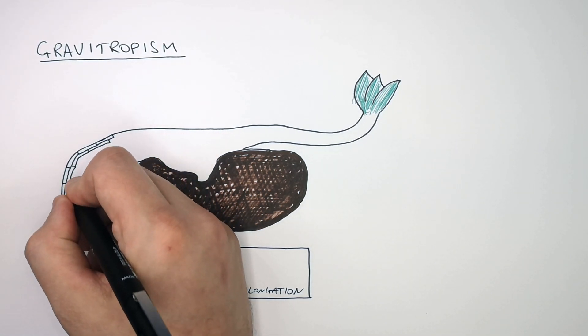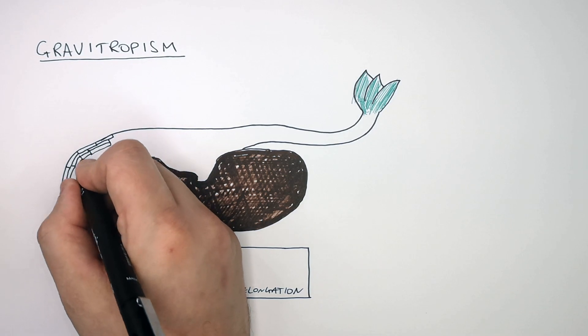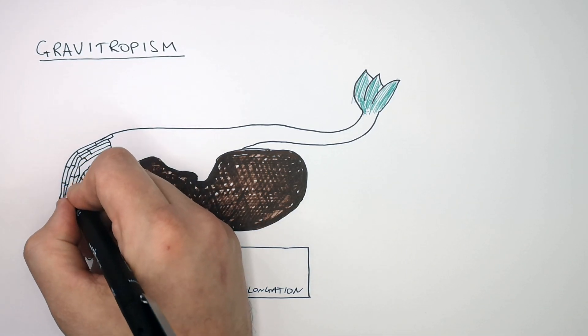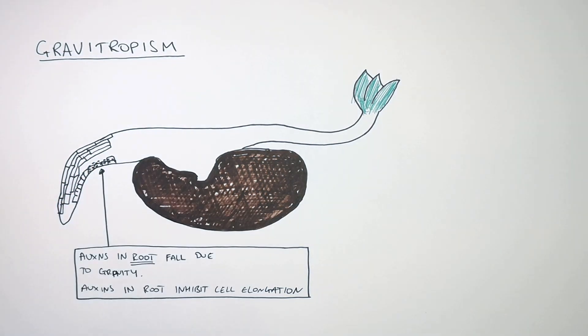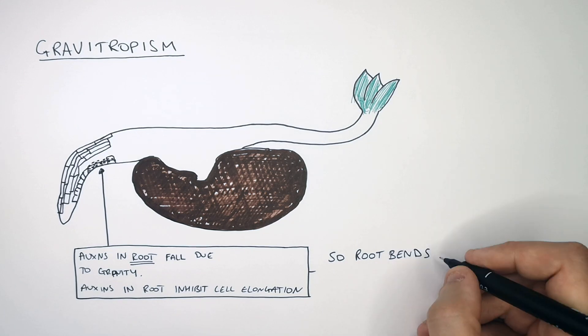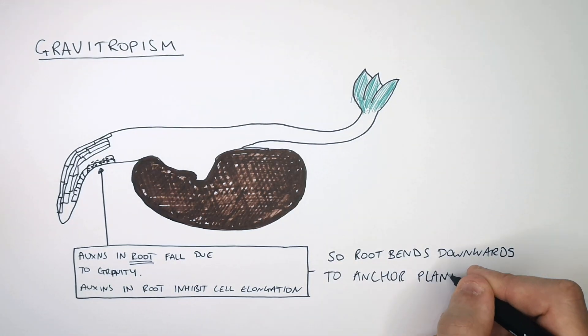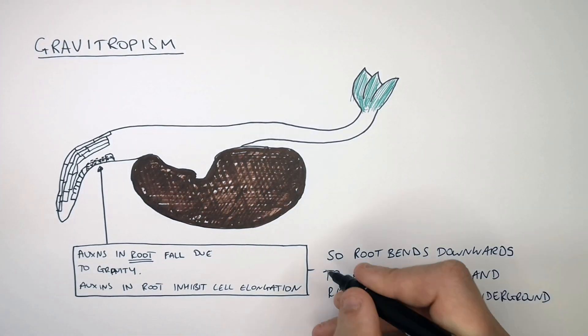Where there are no auxins in the root, the cells are going to elongate more quickly and bend downwards. So the root bends downwards to anchor the plant and reach moisture underground.